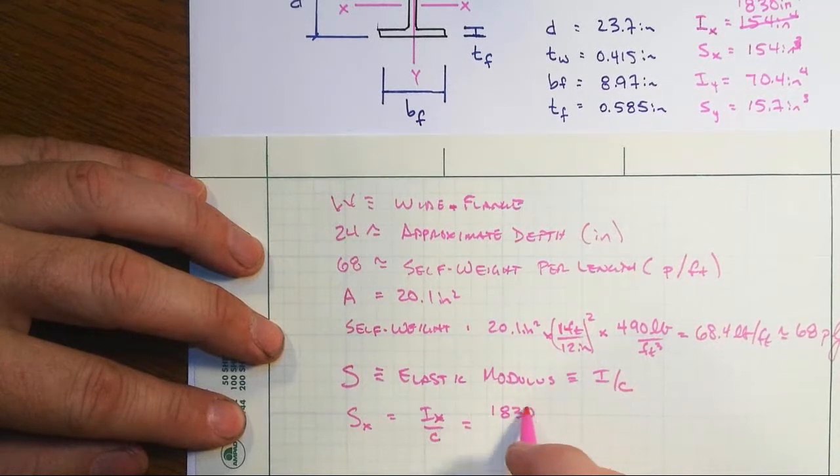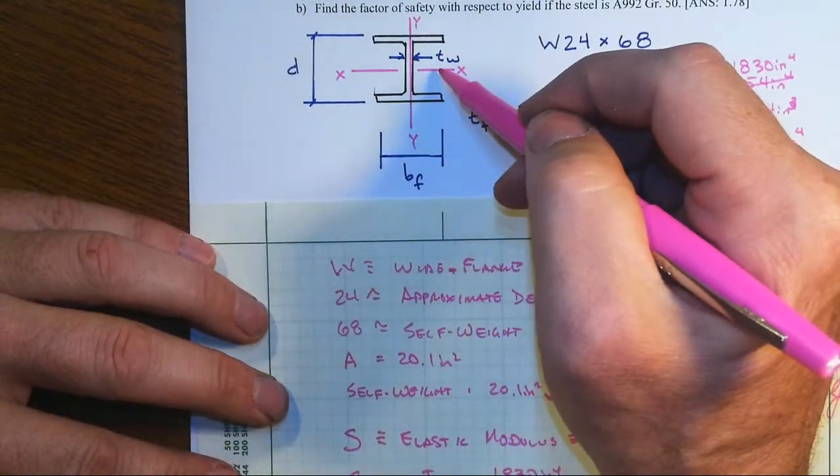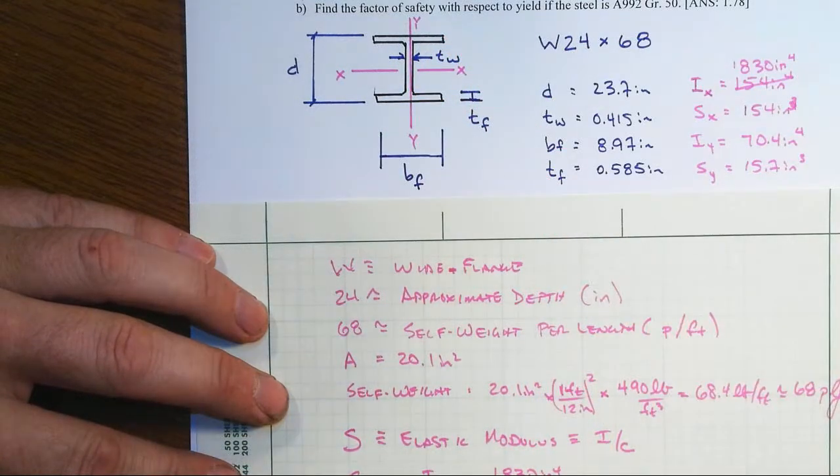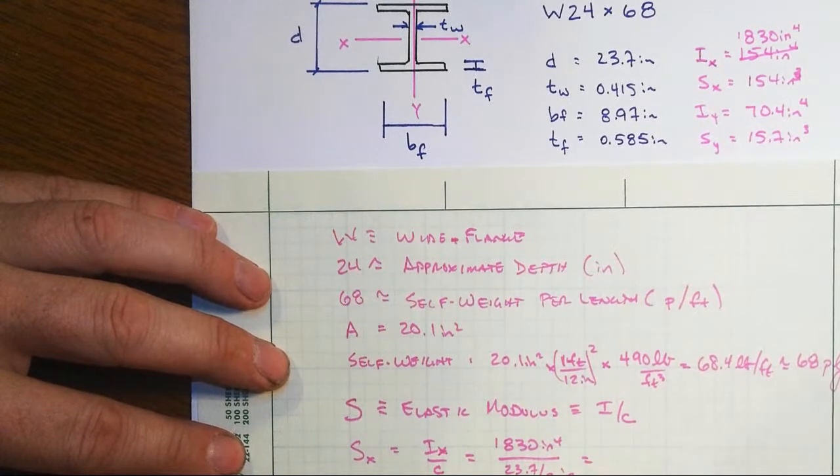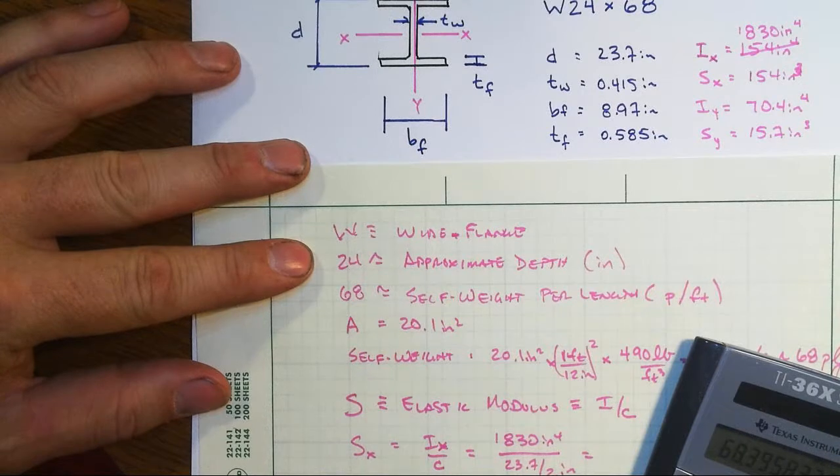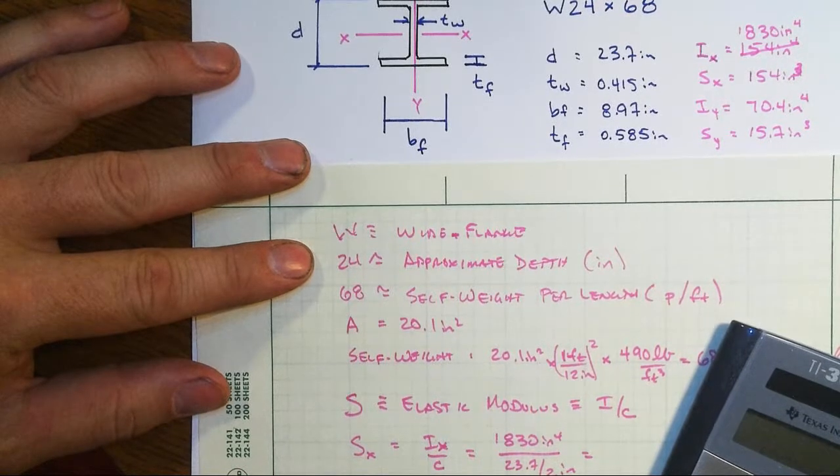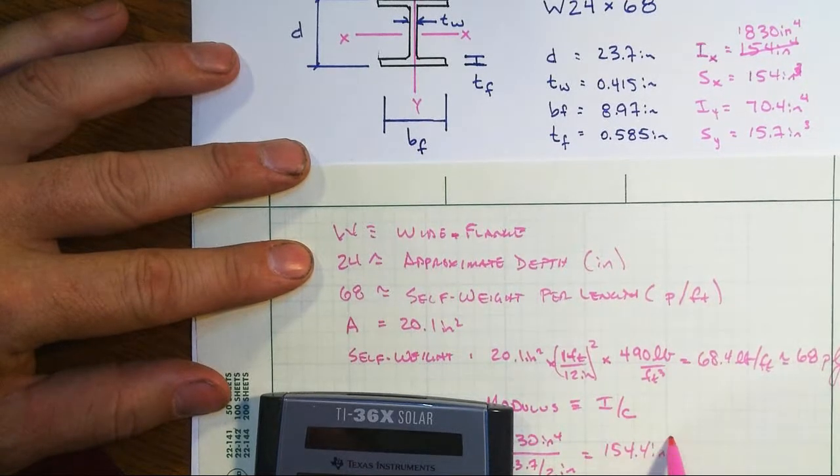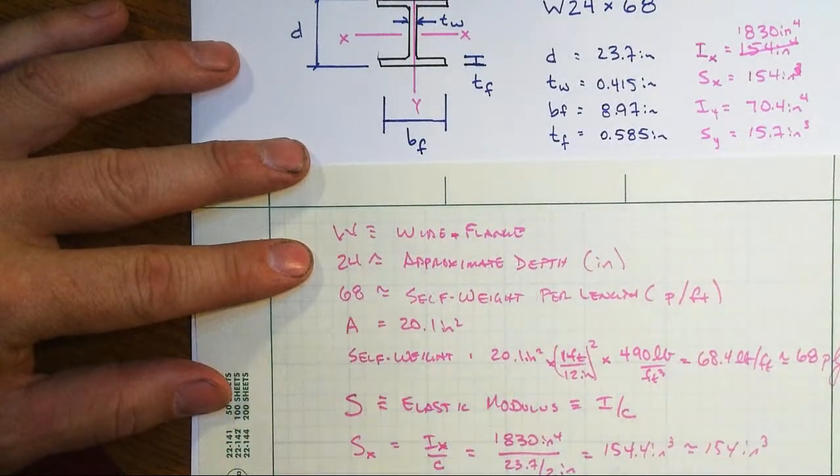And that would be 1830 inches to the fourth divided by the C value is the distance from the x axis to the outer fiber, the farthest part away in the cross-section, which would be one half of the height of the cross-section. And in mechanics of materials, you'll know that gets us to the largest stress, hence why we use it. 1830 times 2 divided by 23.7 then gives us 154.4 cubic inches or about 154 cubic inches, as you see listed in the table.